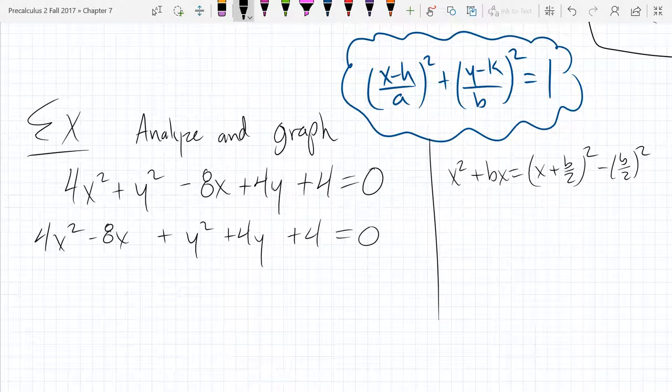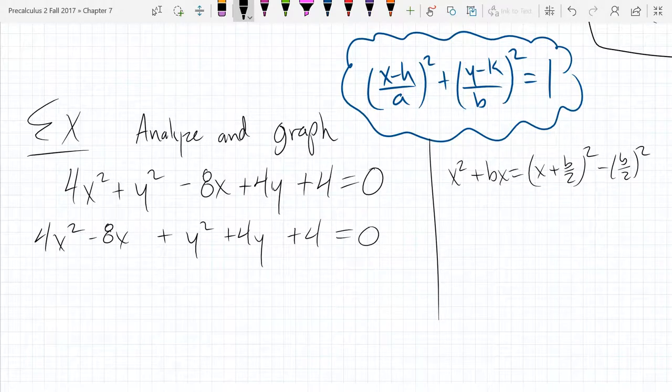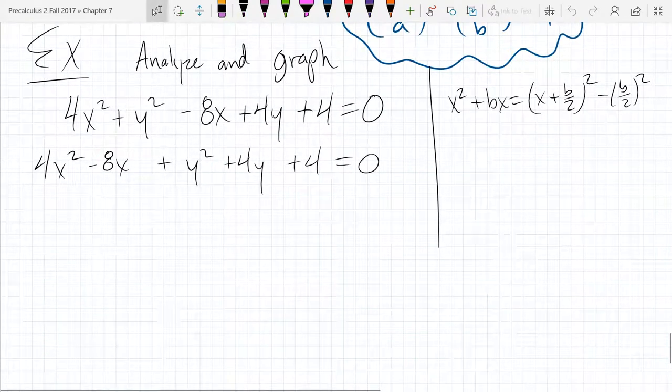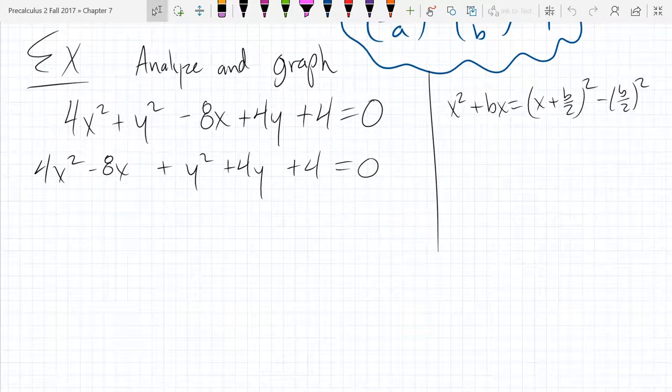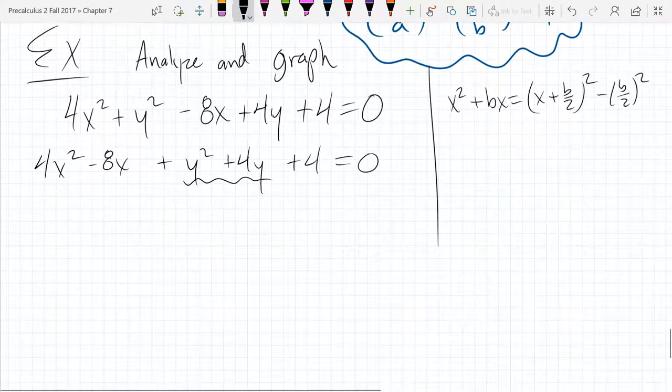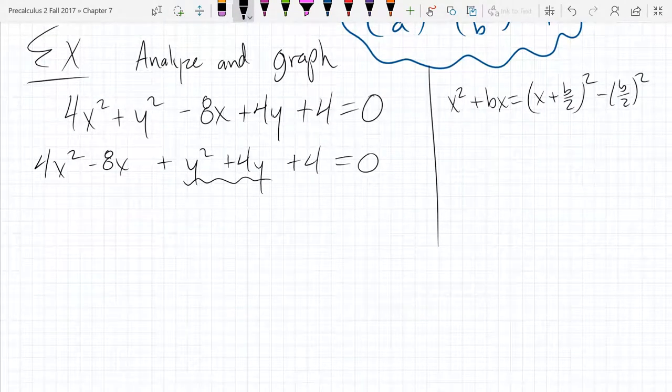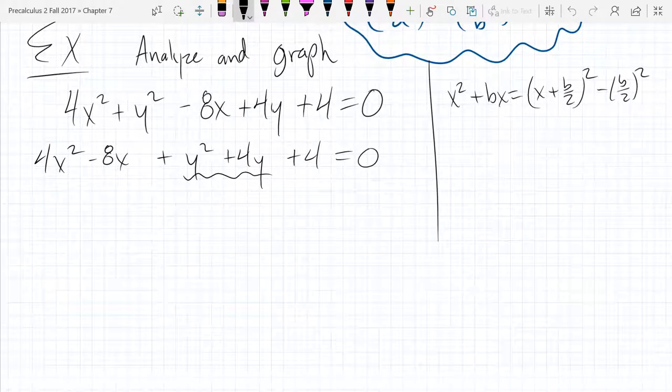x squared plus bx equals x plus b over 2 squared minus b over 2 squared. So hopefully I've made you complete the square enough by now that you're familiar with completing the square. So we're going to do that for the x's and the y's. The y's are a little more straightforward. Let's go ahead and complete that square first. So take 20 seconds and go complete the square on the y's. You're just taking half of 4, which of course is 2.